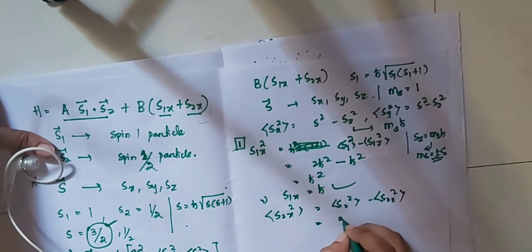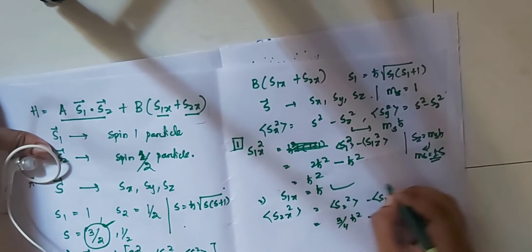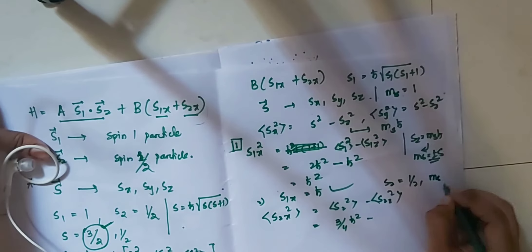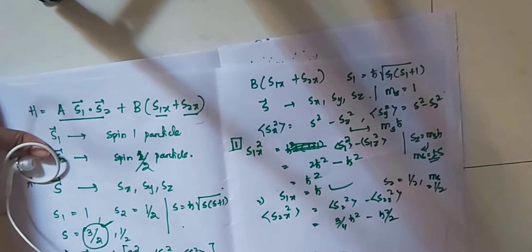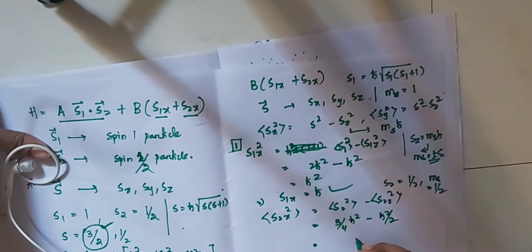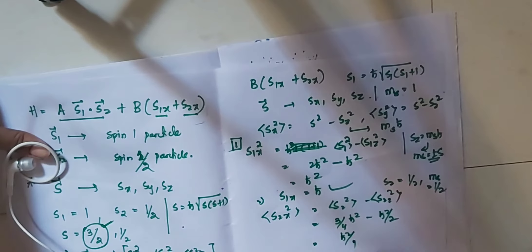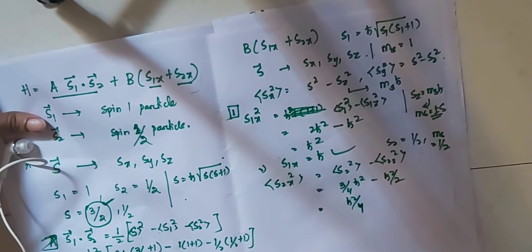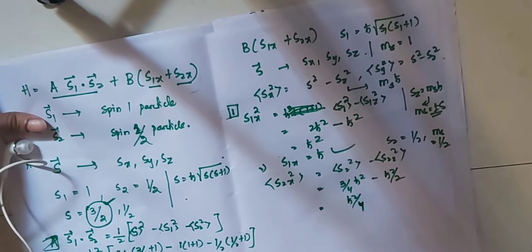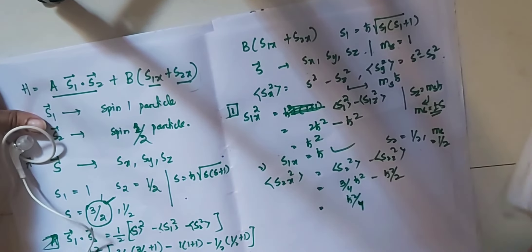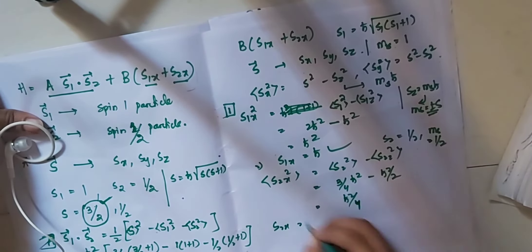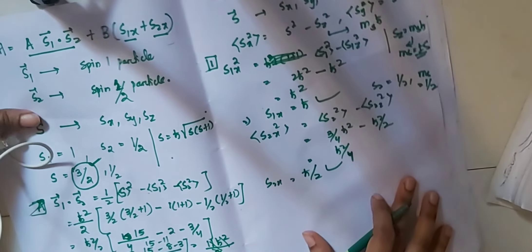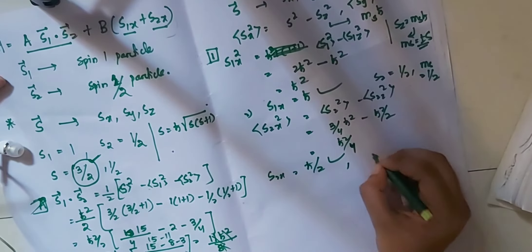For the spin-1/2 particle: S2² = (3/4)ħ², and ms = +1/2, so S2z = (ħ/2). Then S2x² = (3/4)ħ² - (1/4)ħ² = (2/4)ħ² = ħ²/2. Therefore S2x = ħ/√2... wait, taking the eigenvalue result: S2x = ħ/2.